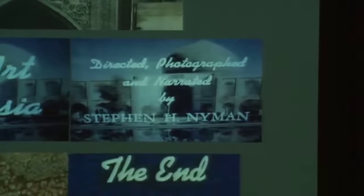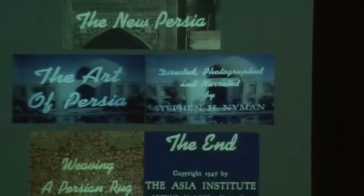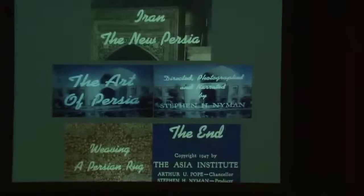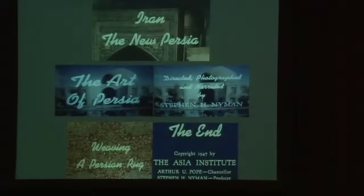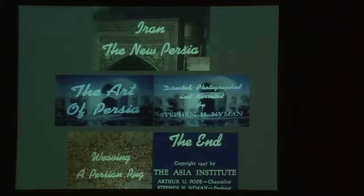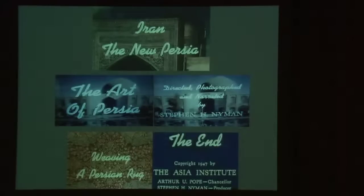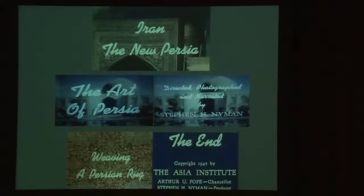The fruits of Nyman's efforts as a videographer are three films: Iran, The New Persia, which is essentially a travelogue of the country — these are all about 20 minutes each; The Art of Persia, which focuses on four crafts or handicrafts as Pope and Nyman called them; and Weaving a Persian Rug, about carpet making. The majority of the footage was shot between 1937 and 1942, but Nyman's finished films weren't copyrighted and circulated by the Asia Institute until 1947.